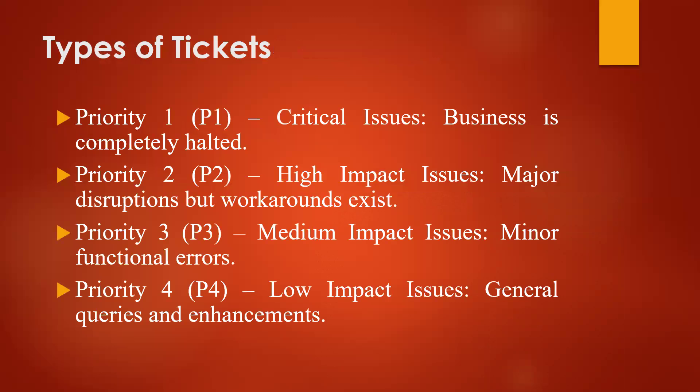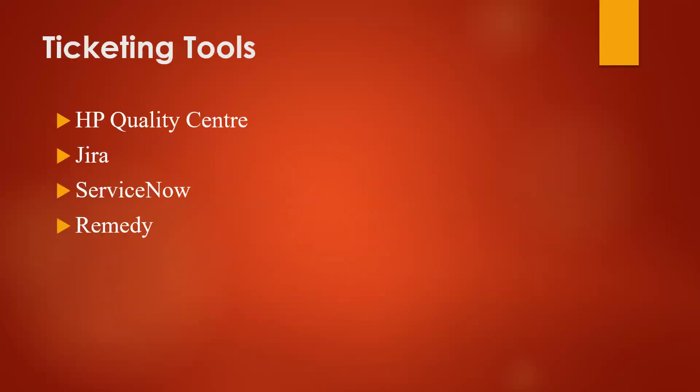They may ask you: what are all the types of tickets? There are critical tickets — L1, L2, L3, L4. A critical ticket means business is completely halted — for example, billing is not being sent to the client. That is a high-impact issue. L2 involves configuration issues, such as a new configuration request. There are also minor-impact and trivial-impact levels. They may also ask about ticketing tools: Jira, Service Now, Remedy, HP QC (Quality Center). These are all common ticketing tools.